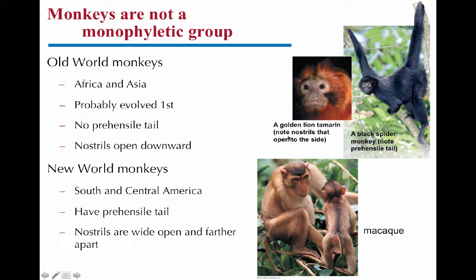The new world monkeys live in South and Central America, and you can see they have sideways-open nostrils. They have prehensile tails — like the spider monkey — where the tail can grip and almost act as a fifth arm, which old world monkeys don't have in general.